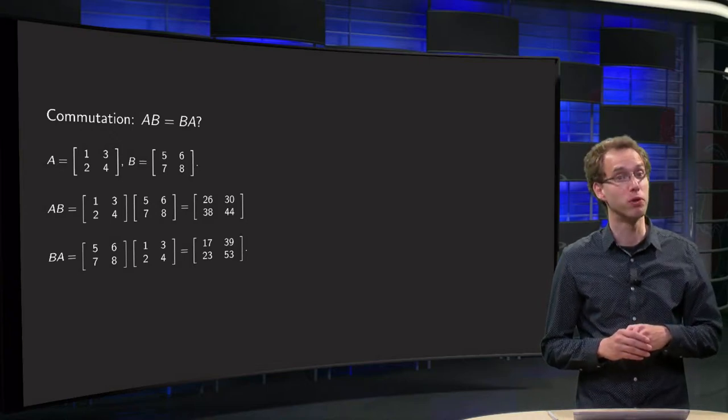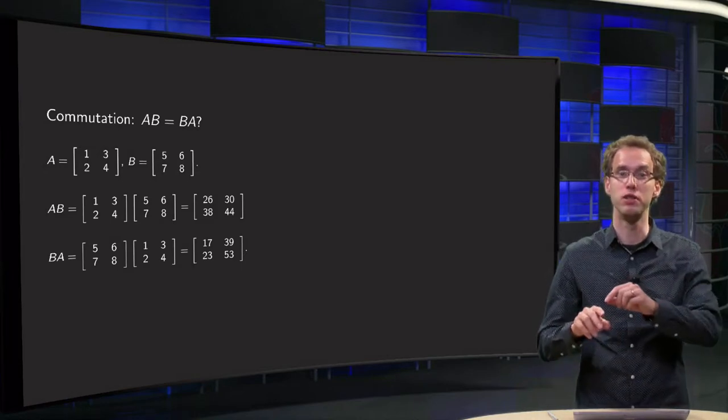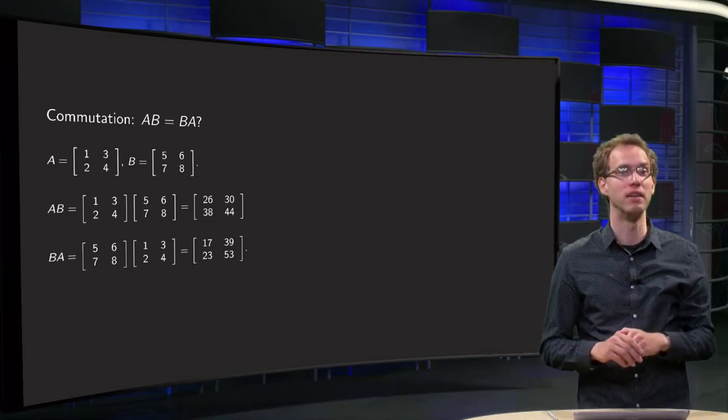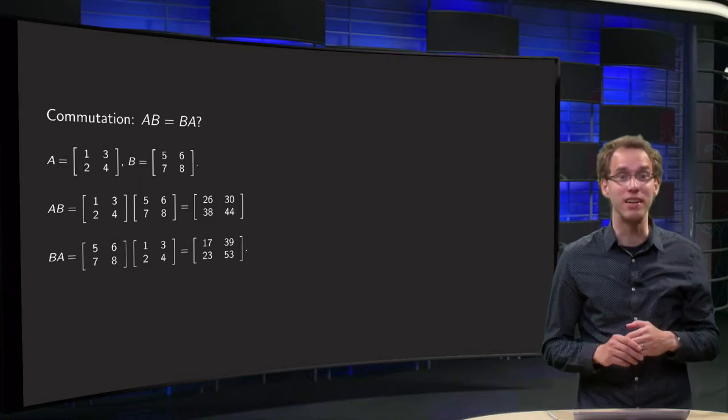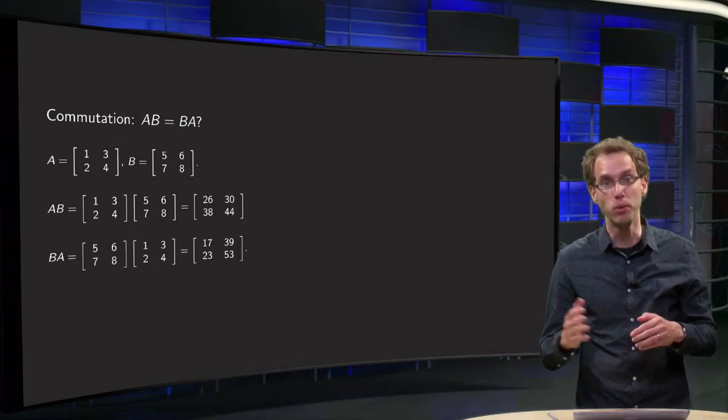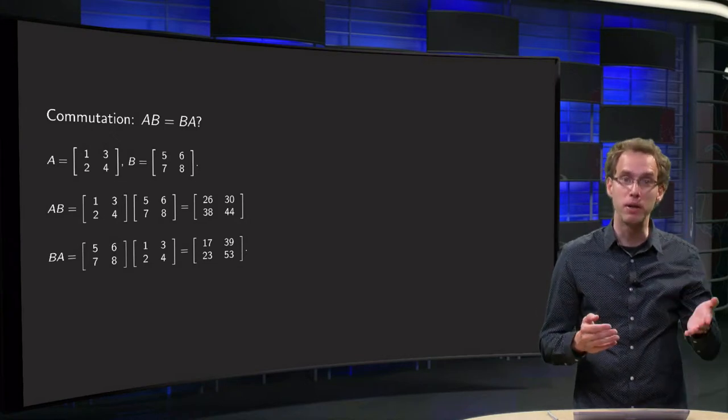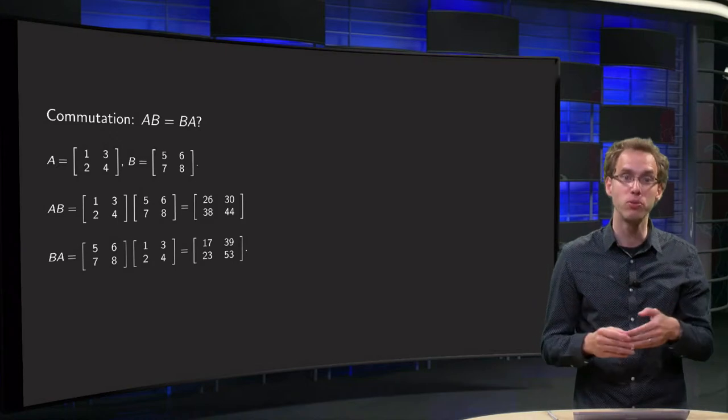You have already seen that you cannot multiply all matrices A and B. The width of matrix A needs to be the same as the height of matrix B. This means in particular that if we have A, a 3 by 2 matrix, and B, a 2 by 2 matrix, we can compute A times B: 3 by 2 times 2 by 2 equals 3 by 2.